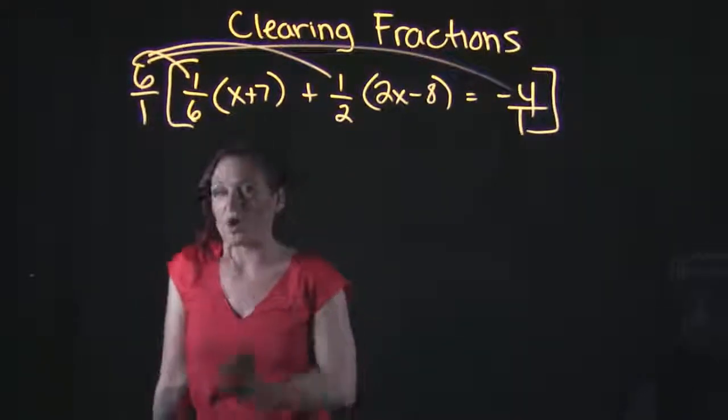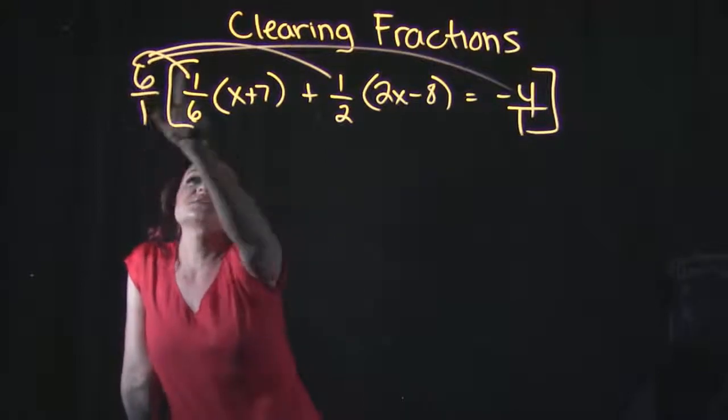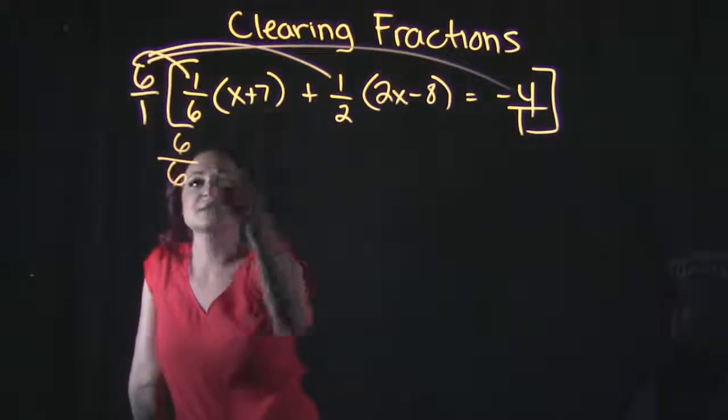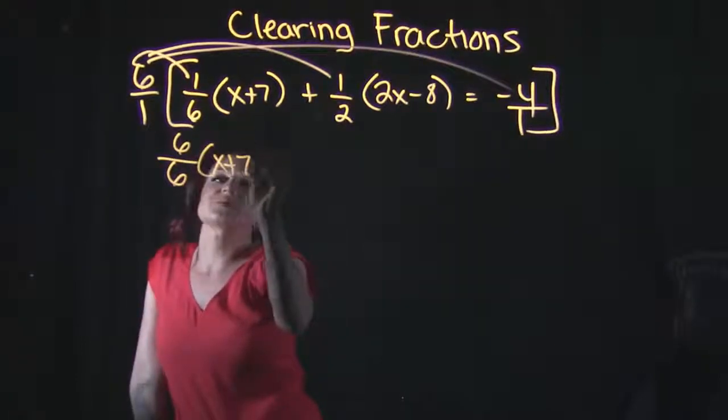So looking at this one here, six times one is six, six over one times six is six, drop down the x plus seven with it.